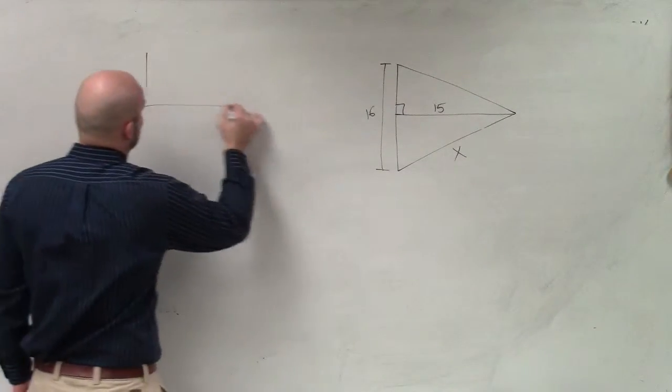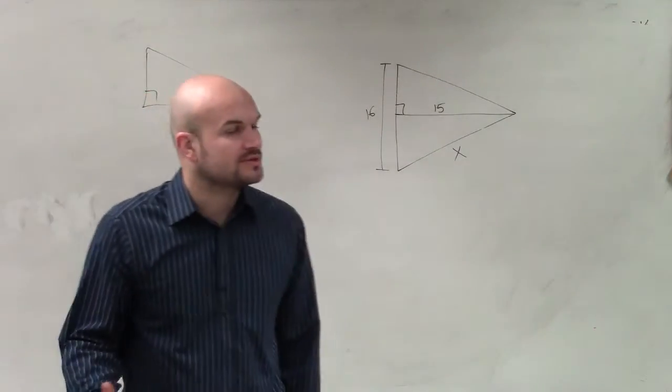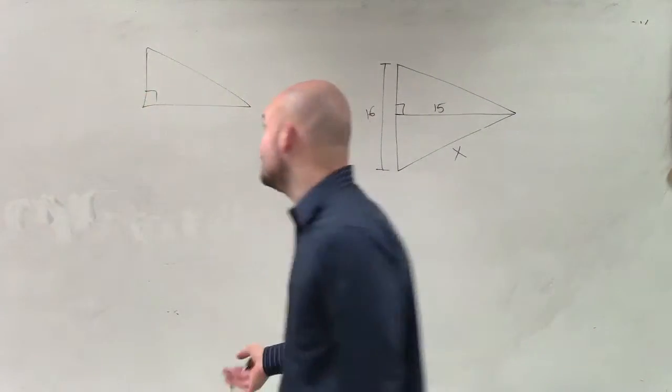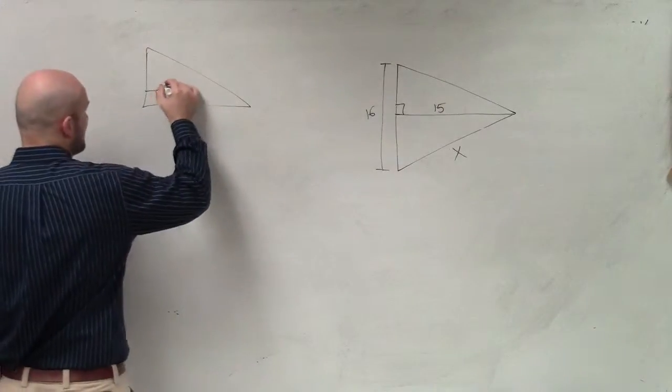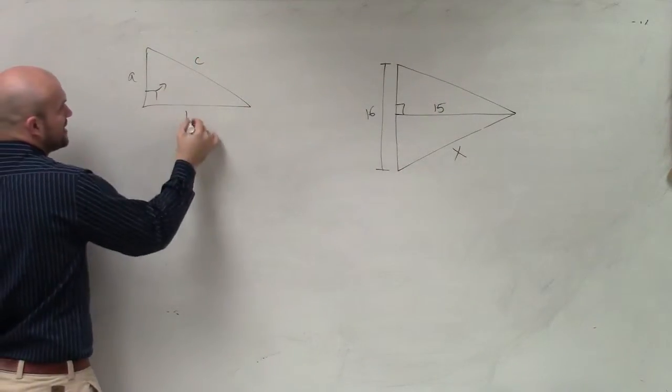So there's a couple things we need to remember about the Pythagorean theorem. First of all, we can only apply the Pythagorean theorem when we have a right triangle. So we need to make sure we have a right triangle. And then also, remember from the right triangle, the opposite side is what we call our hypotenuse. And then the other two sides are our legs.